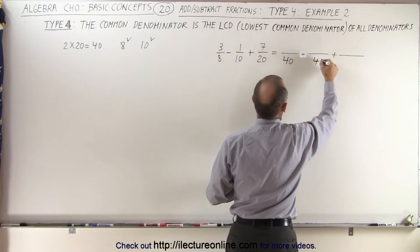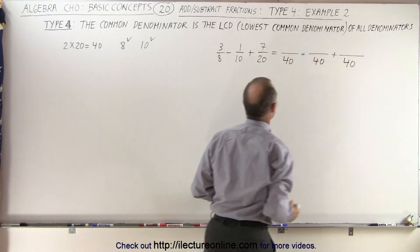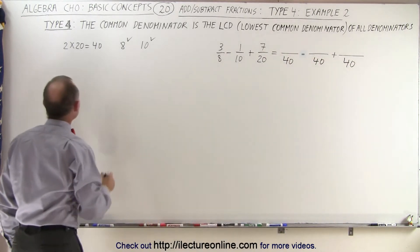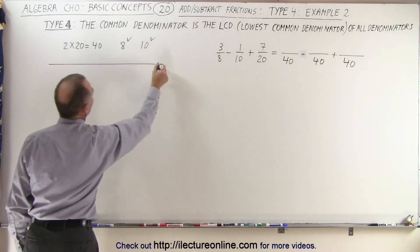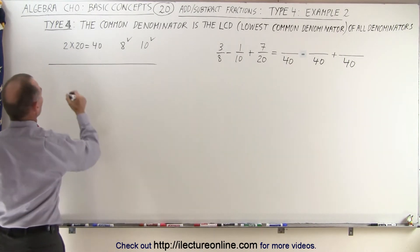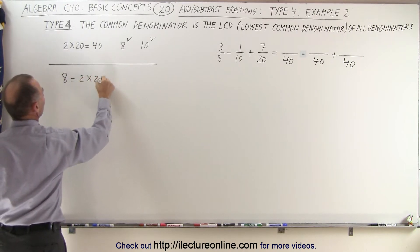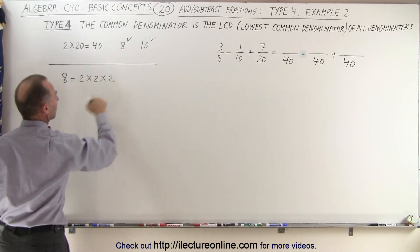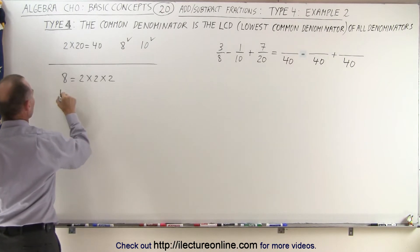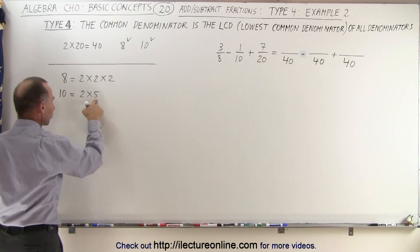But just so you can see that the other method works as well, in case you were to try that, you're going to write each of the three denominators as a product of its factors. So you can see that 8 can be written as 2 times 2 times 2, which means the factor 2 appears 3 times. The number 10 can be written as 2 times 5, so the factor 2 appears once and the factor 5 appears once.